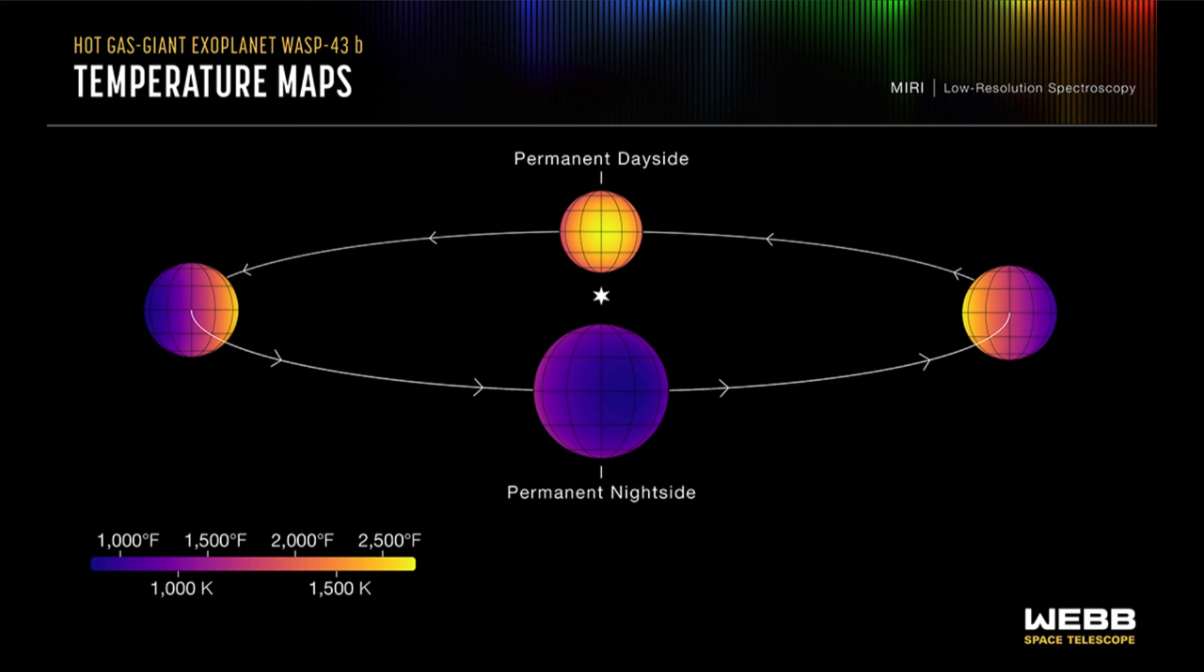Now a hot Jupiter is an unusual type of planet, something we don't have in our solar system. It's one of the things we've been finding as we discover more and more planets outside the solar system. A hot Jupiter refers to a planet that is Jupiter-sized but is very close to its star.